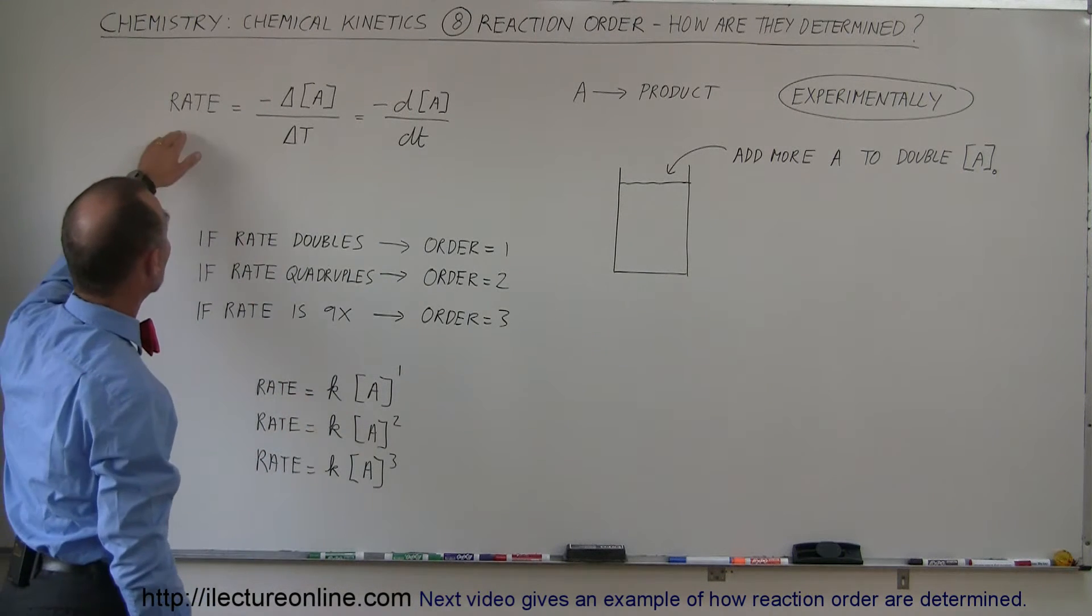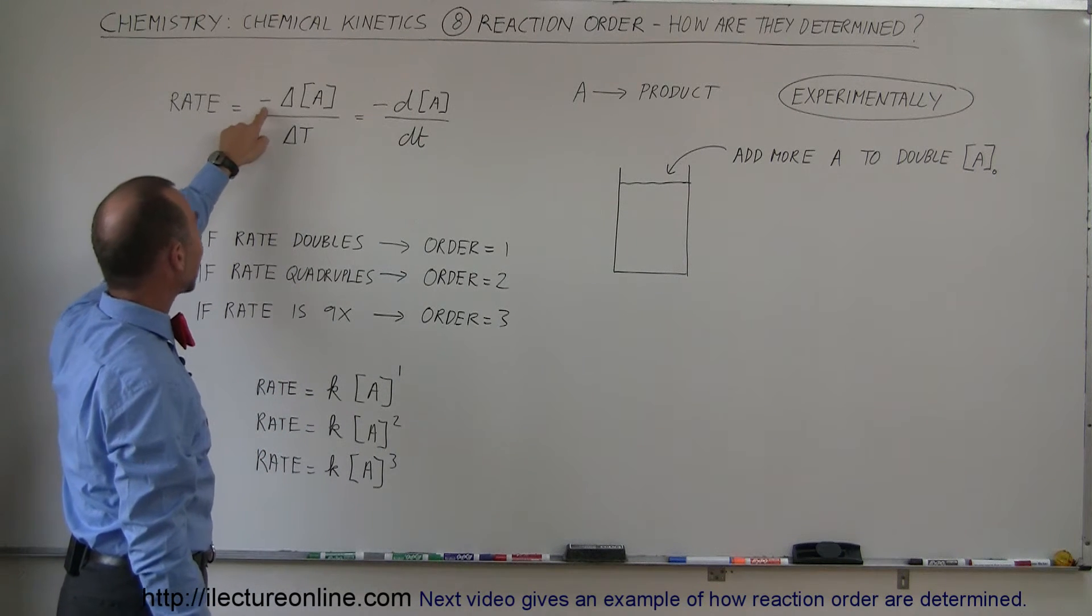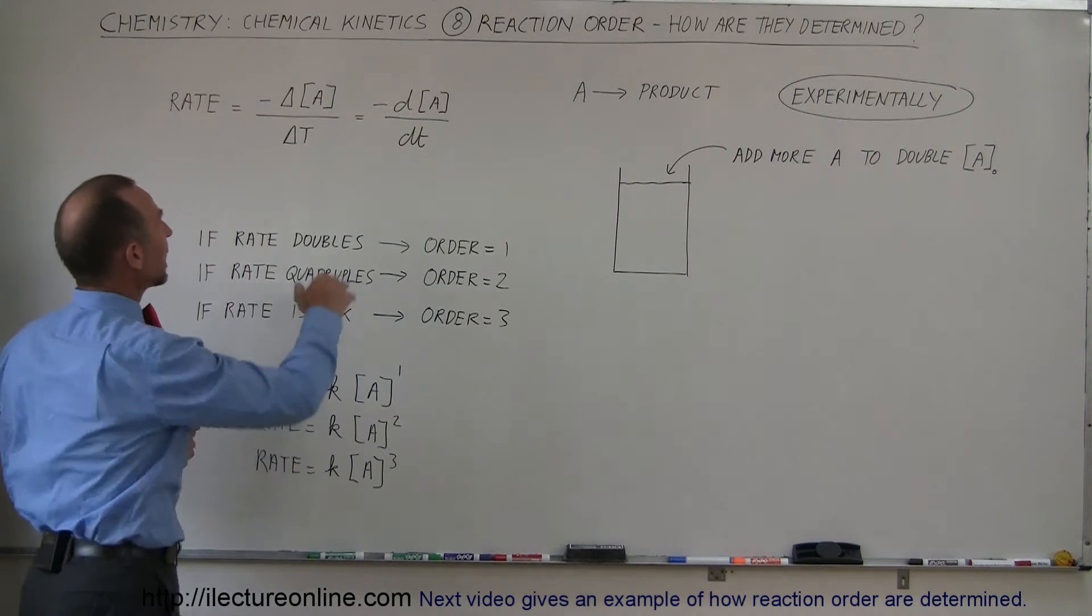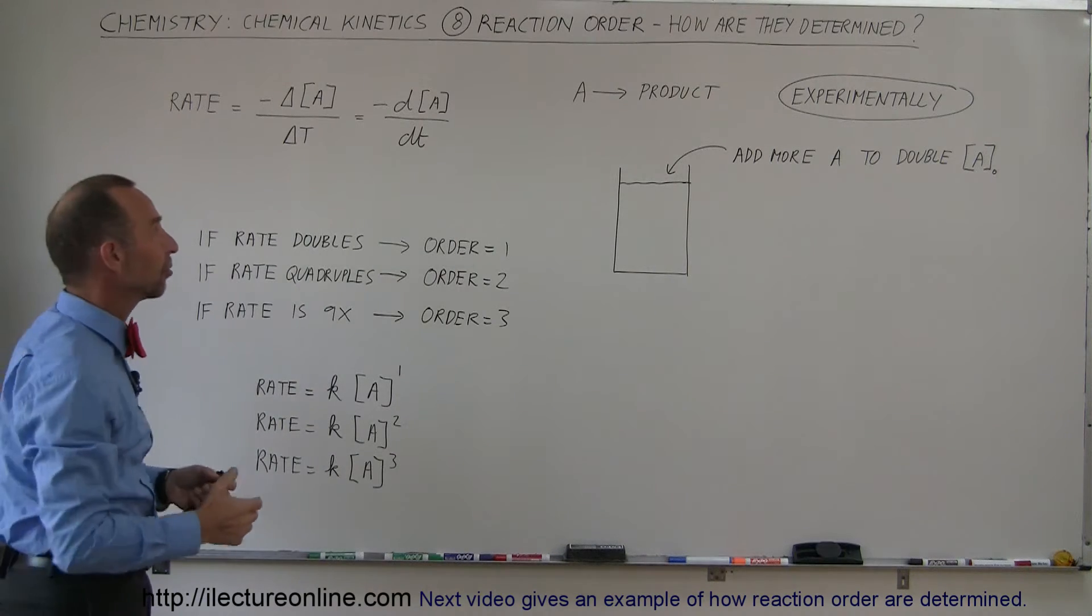By definition, the rate is equal to the negative change in the reactant's concentration divided by the time that elapses. We can also write this in differential form, and later on we'll use it to derive some equations.